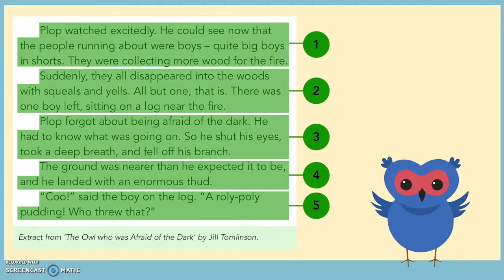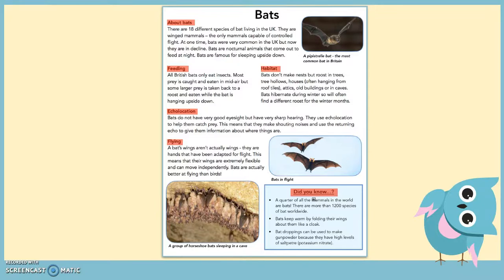Here you can see each paragraph highlighted in green with a number alongside it. When paragraphs are not separated by subheadings like in our non-chronological reports, they usually start with an indent — going in a little bit on the line — to help readers see where each paragraph starts. Did you notice that? In reports like our non-chronological report on bats, it's helpful to give each paragraph a subheading. This subheading tells the reader what the theme of the paragraph is. You can see how all the facts about what bats eat are in one paragraph, and all the facts about how they fly are in another.